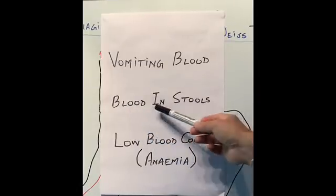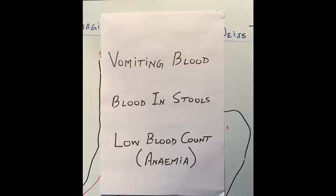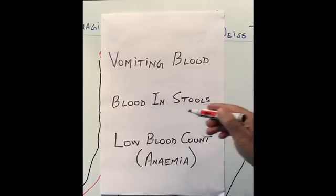If blood is coming from the top end — the gullet and the stomach — because the stomach produces acid, the acid changes the color of the blood to very dark, like coffee, or almost jet black like tar. So bleeding from the top end, if it comes out in the stools, will be almost tarry black. That jet-black, sticky, slimy, very smelly stool is called melena.